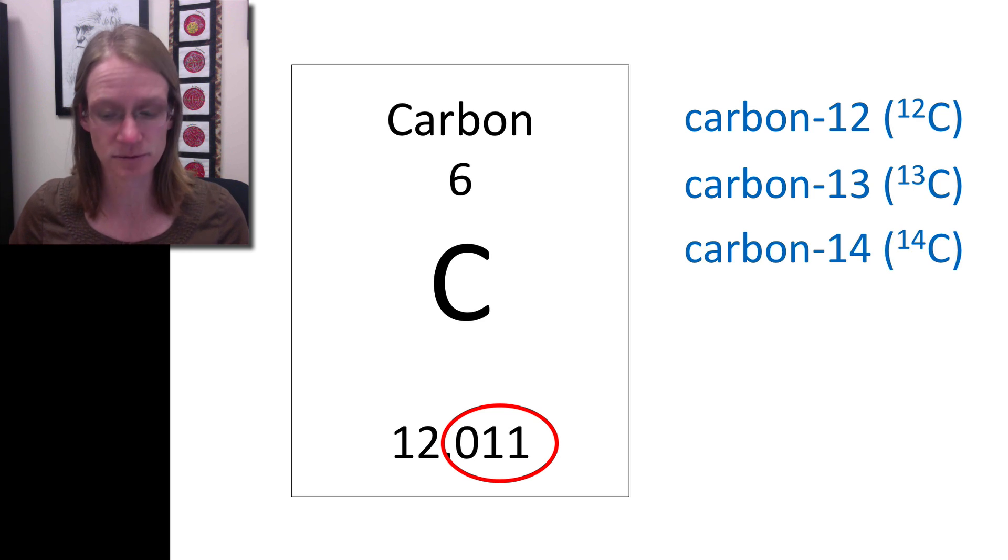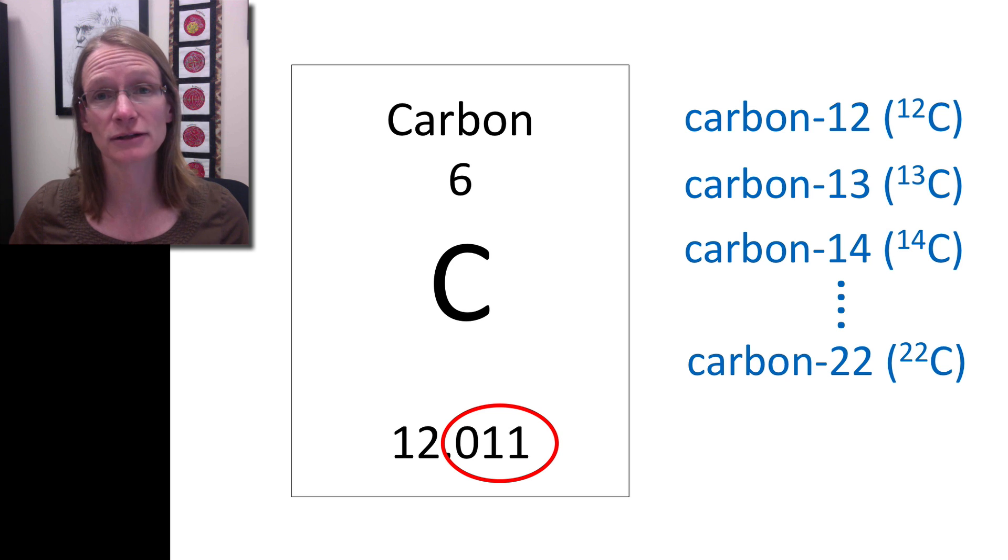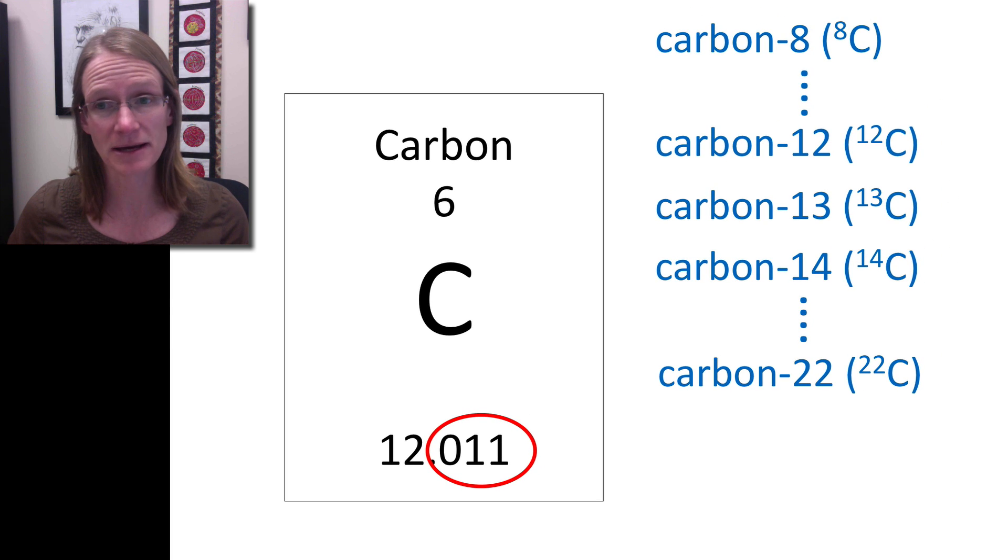We can see there are lots and lots of different forms of carbon—they keep going: carbon-15, carbon-16, all the way up to carbon-22. We can also reduce or lose the number of neutrons to make it even lighter, so it can go from carbon-11 to carbon-10, all the way down to carbon-8.